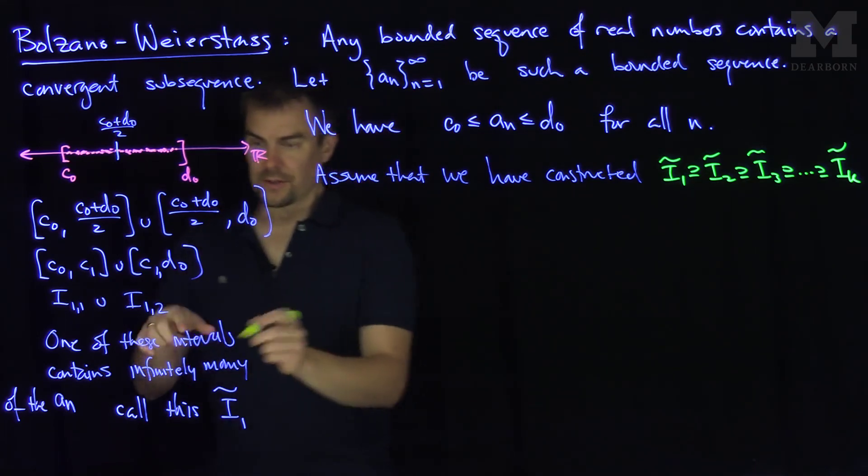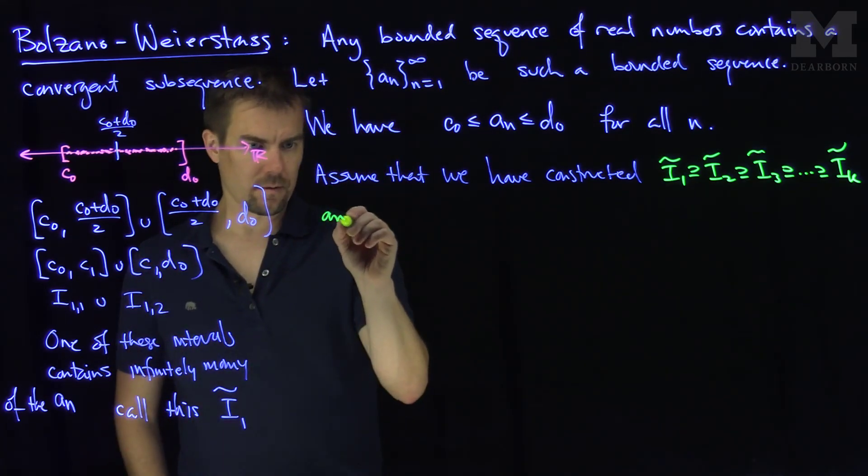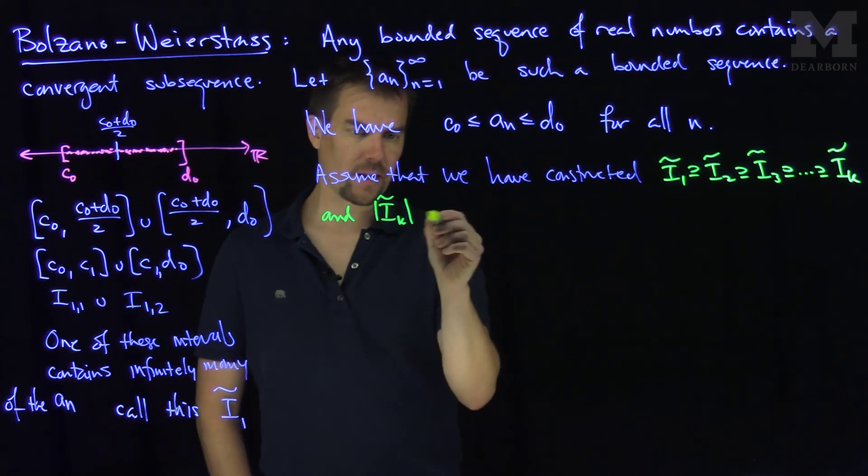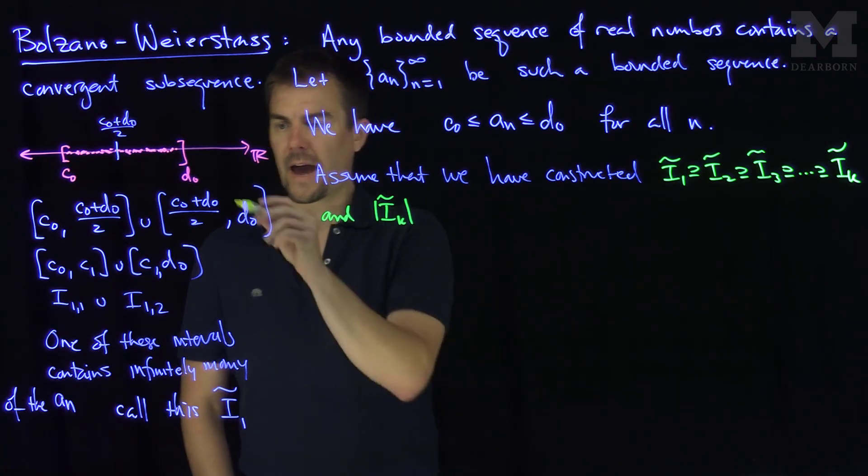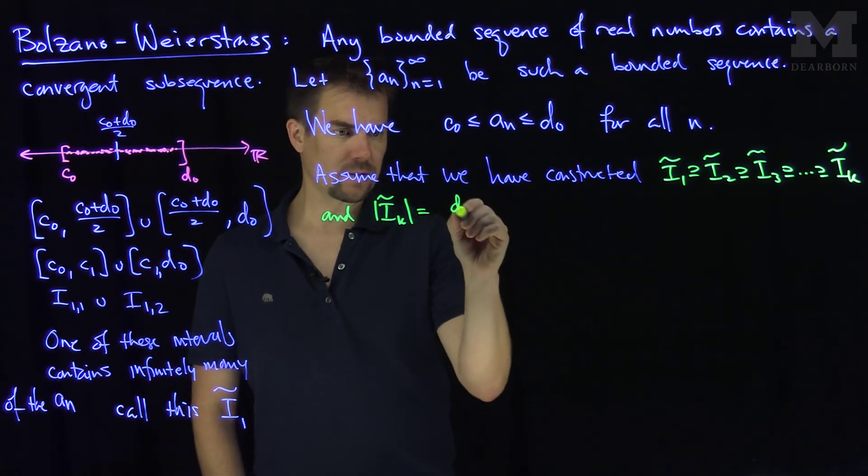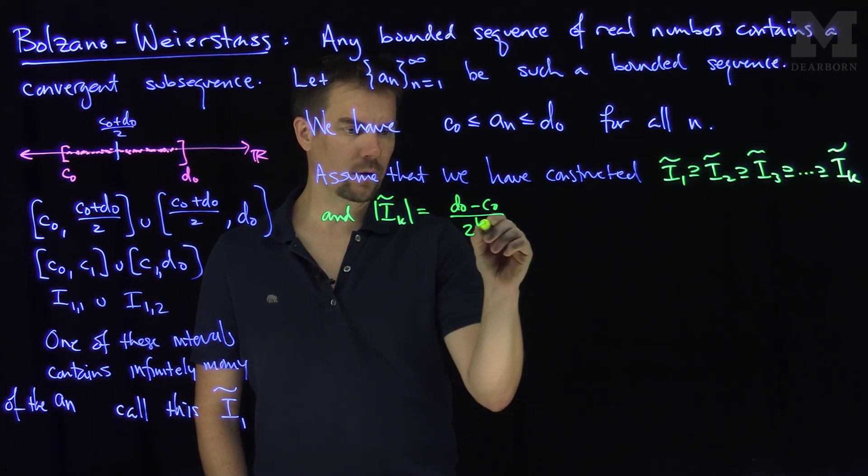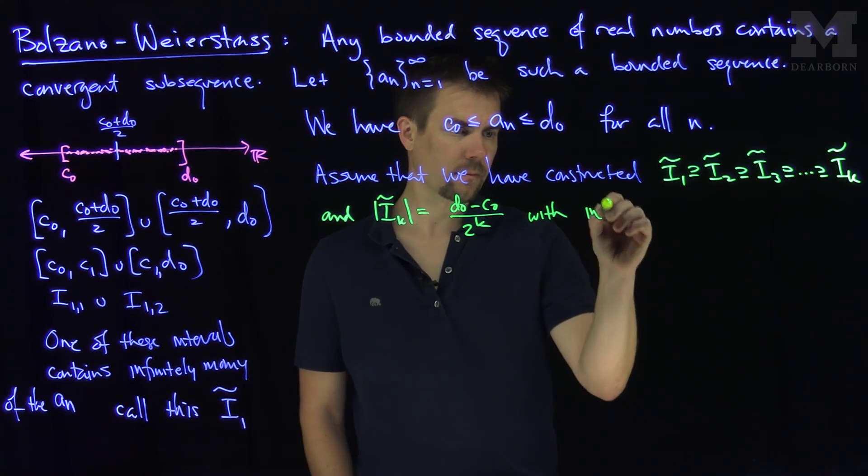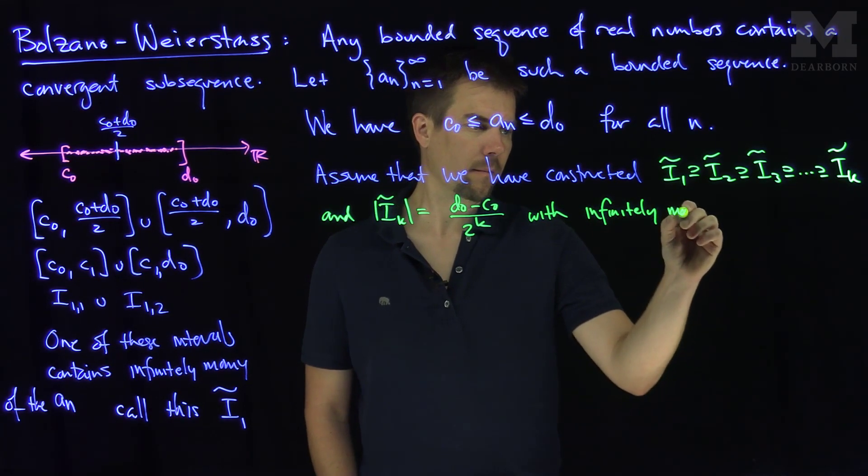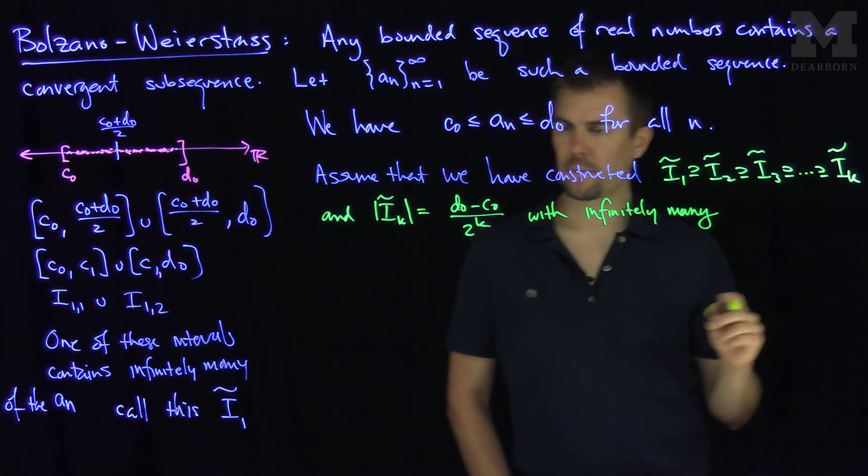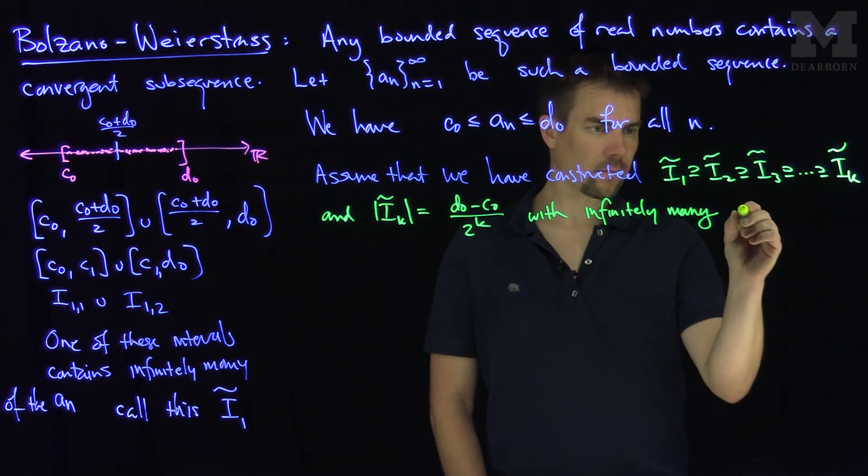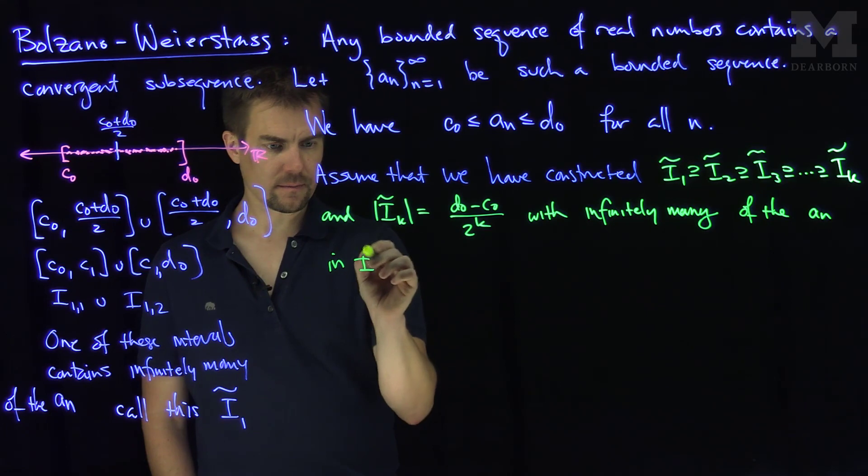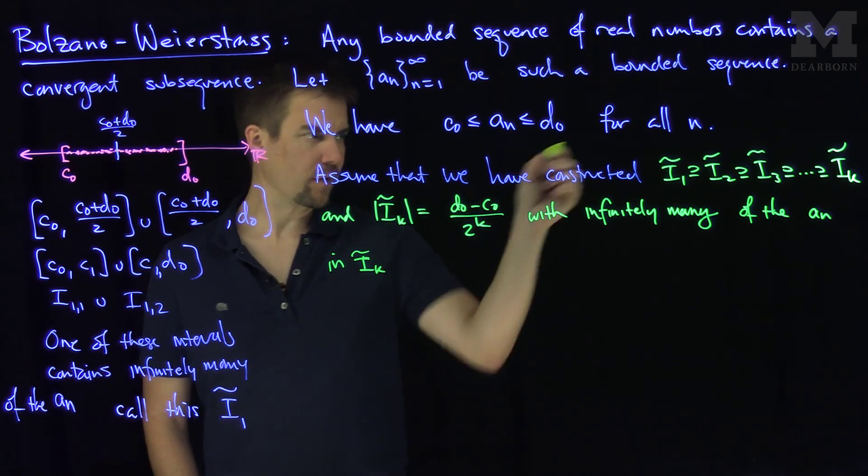And each of these intervals, the length of ik tilde for any of these k's, for any L, is equal to half the length of the overall thing. So this is going to be d0 minus c0 over 2 to the power k, and with infinitely many of our sequence of the an in i tilde k, for any of these things.